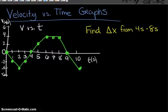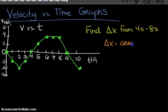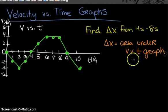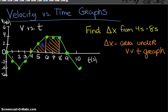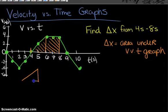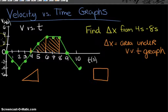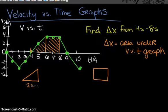The next question asks for the displacement of the object from four seconds to eight seconds. For a velocity versus time graph, displacement equals the area under the V versus T graph. Between the four-second and eight-second clock readings, I can identify two shapes: a triangle from four to six seconds and a rectangle from six to eight seconds.